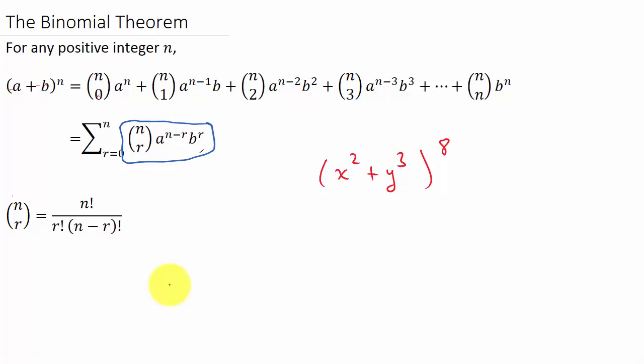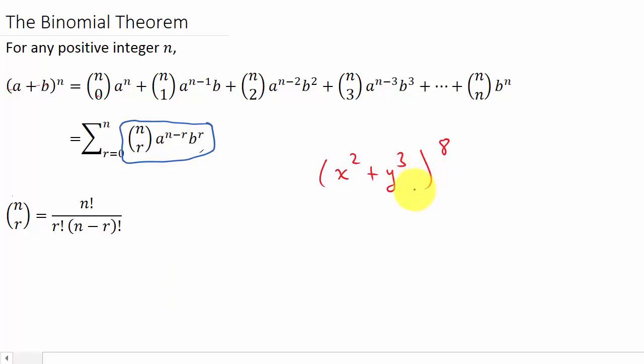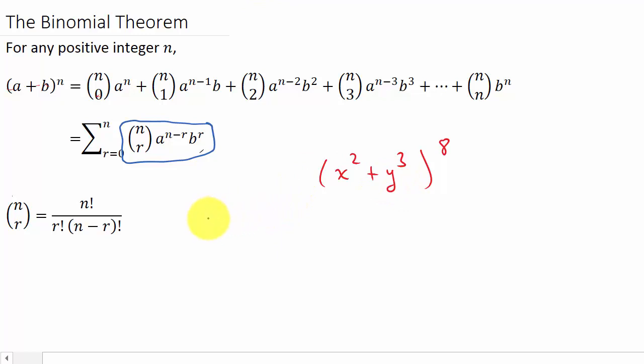You can calculate n choose r by hand, or you can do it on your calculator. If you have the TI graphing calculator, look it up in the book that came with it. If you have a simple scientific calculator, look inside the cover — there's usually a card that tells you how to enter a combination. So for this problem: a is x squared, b is y cubed, n is 8, and we need to find r.